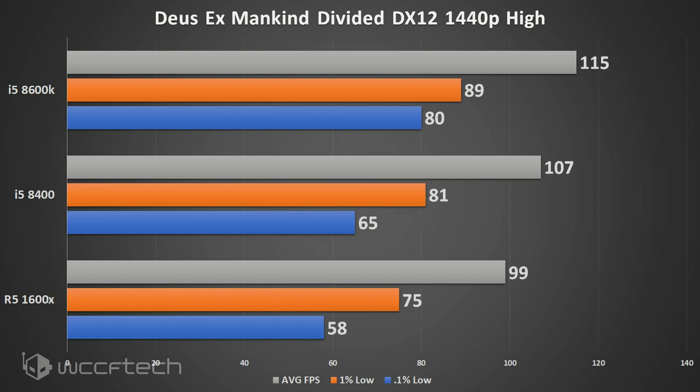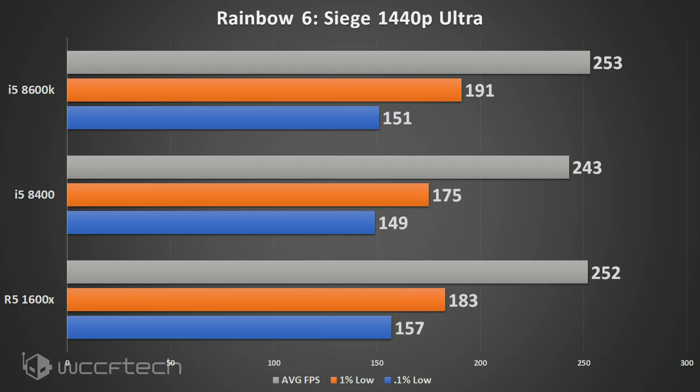In Deus Ex: Mankind Divided the core architecture is simply preferred by the game, with the 8400 taking a sizable victory over the 1600X even in the modern DX12 API. Finally in Rainbow Six Siege, the 1600X and the 8600K sit neck and neck, with the 8400 marginally behind — though frame rates are so high it's unlikely anyone will care.